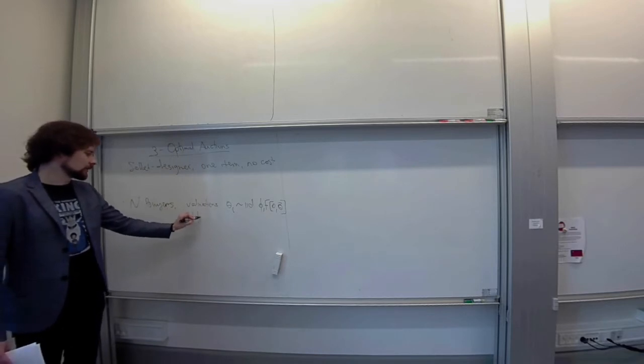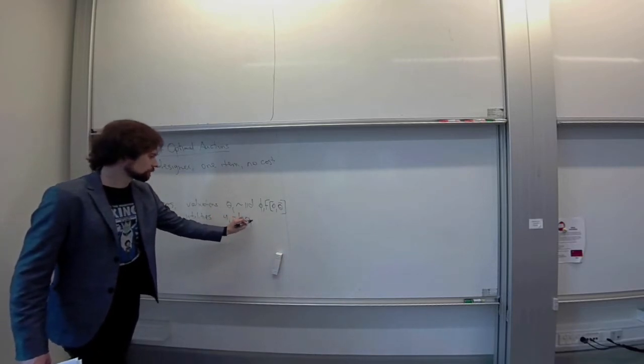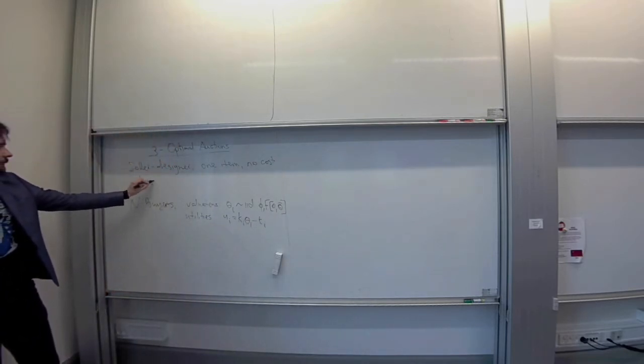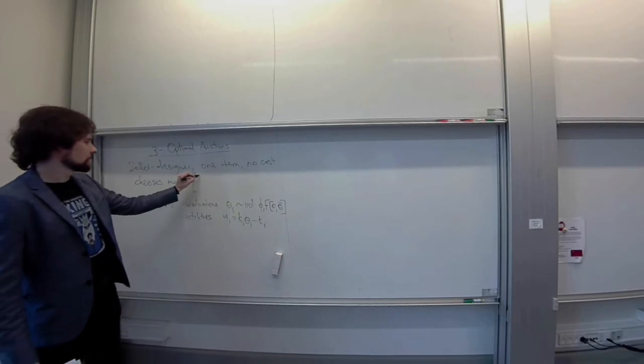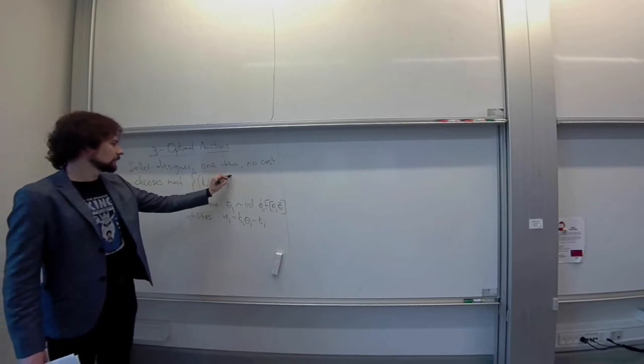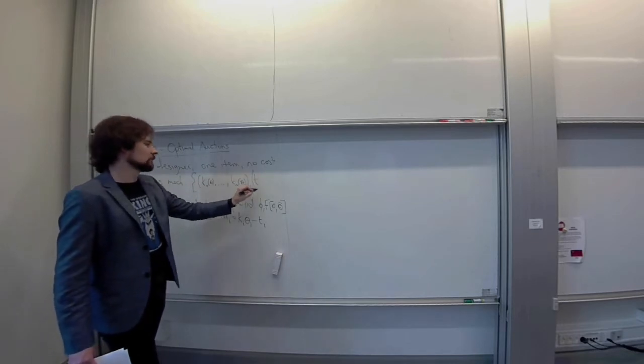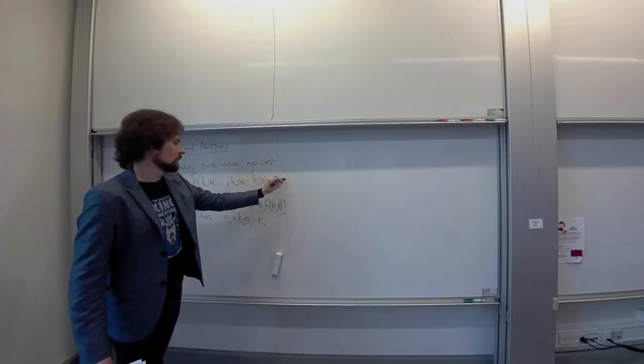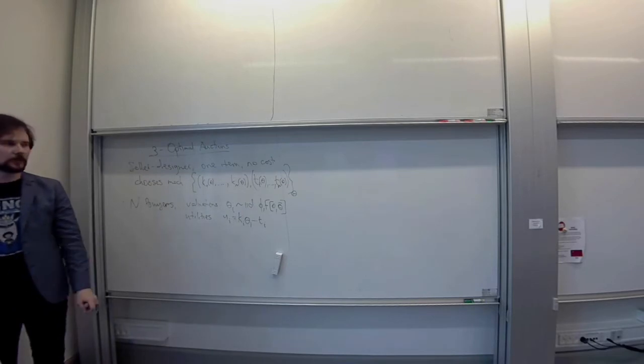With Euclidean utility functions. And so the designer chooses a mechanism which is now given by a vector of Ks for every player. K n of theta, and transfers, again, vector for all players, T n of theta. And this is for all theta's. So, again, the same problem, just many buyers.